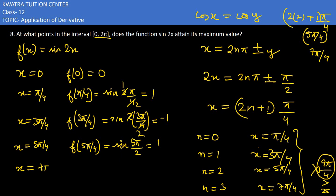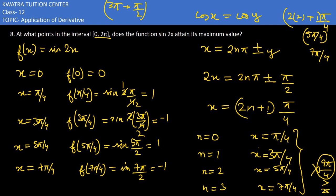At x = 7π/4: f(7π/4) = sin(7π/2). Now 7π/2 = 3π + π/2, which equals −sin(π/2) = −1, using the identity sin(π + θ) = −sin(θ). At x = 2π: f(2π) = sin(4π) = 0.